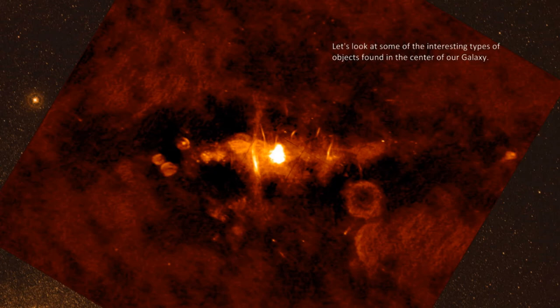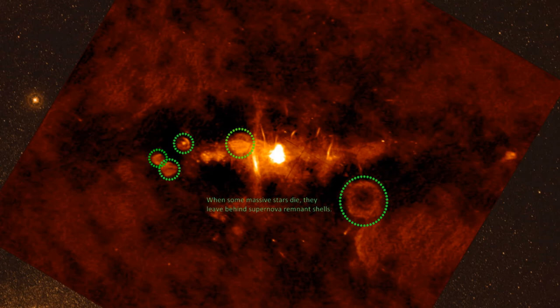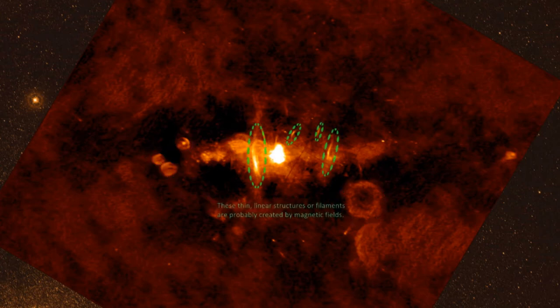Let's look at some of the interesting types of objects found in the center of our galaxy. When some massive stars die, they leave behind supernova remnant shells. These thin, linear structures, or filaments, are probably caused by magnetic fields.